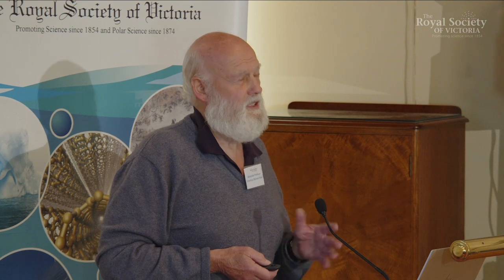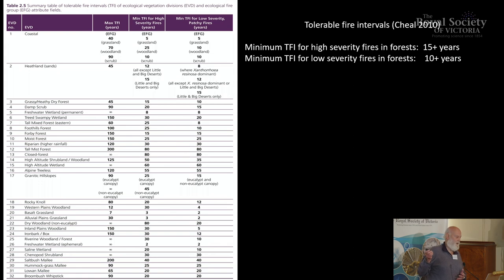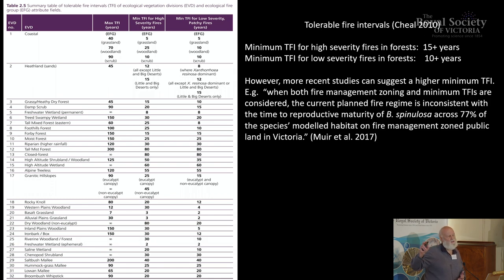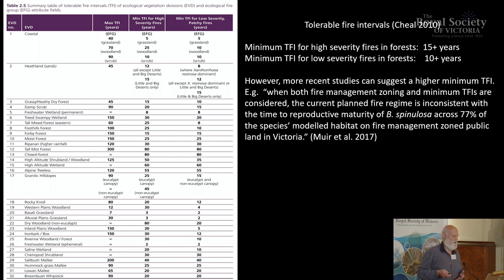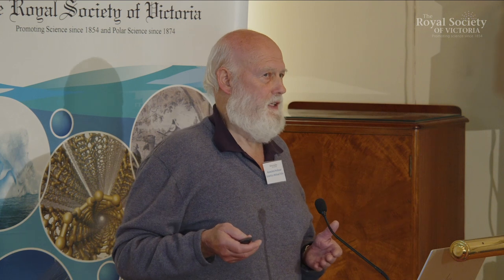The tolerable fire intervals primarily come from a 2010 publication which listed different intervals for different types of vegetation or EVCs. For a high severity fire, the minimum tolerable fire interval was about 15 years or greater in the wetter forests, such as the ash forests. And a large chunk of those EVCs had been burnt within the last 15 years.